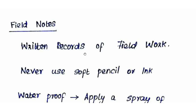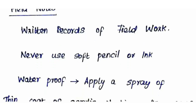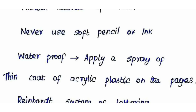We use some rules for field notes. We use a hard pencil (H pencil) rather than soft pencil, because in damp or weathering conditions soft pencil smudges. Hard pencil is smudge-resistant. Field notes should be waterproof — we apply a thin coat of acrylic plastic spray on the pages of the field book for waterproofing.